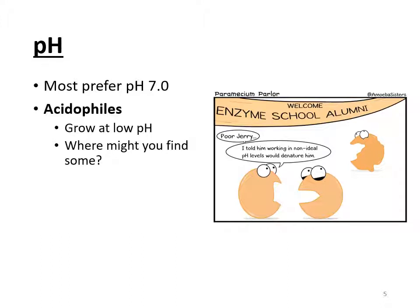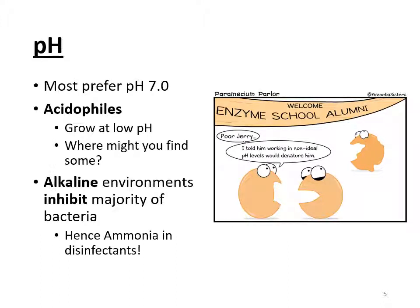Ask yourself where you might find acidophiles in your body. The stomach is a big one — the GI tract, your gut. So any organisms thriving there would have to be acidophiles. On the opposite side of the spectrum, alkaline environments tend not to have many microbes that can survive. Alkaline is just a fancy way of saying basic. That's why a lot of disinfectants are alkaline — things like ammonia — because even though we have many microbes that can survive acidic, we don't really have many that can survive alkaline.